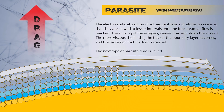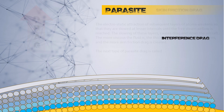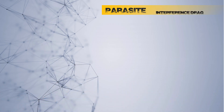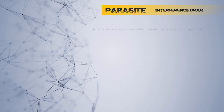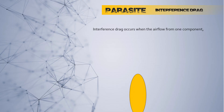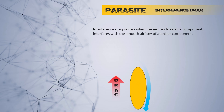The next type of parasite drag is called interference drag. Interference drag occurs when the airflow from one component interferes with the smooth airflow of another component.